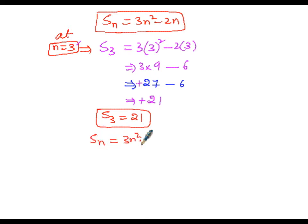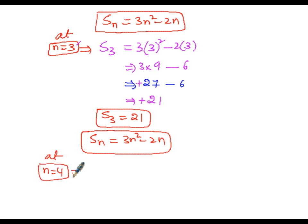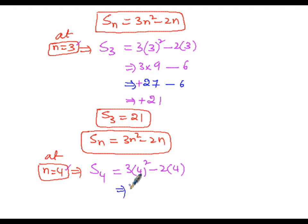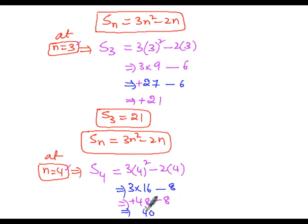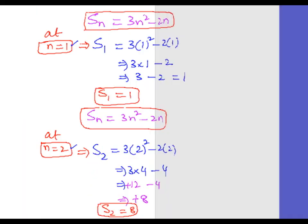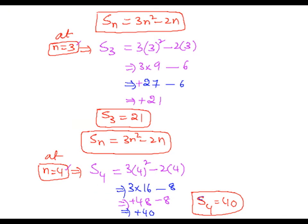Based on the condition S(n) equals 3n squared minus 2n, at n equals 4, S(4) equals 3 into 4 squared minus 2 into 4, which gives 3 into 16 minus 8, that is 48 minus 8 equals 40. So S(4) equals 40.